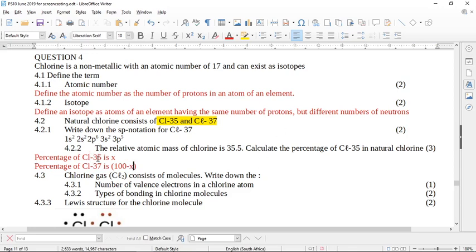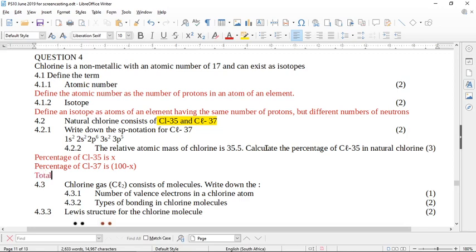So we have 100 minus X. Now remember this is the mass and there are X of them. And then our average is going to be 35.5. So if we find the average, we put the total mass over the total number of atoms, and that's going to give us an average mass. So to find the total mass, it'll be 35 times X, that'll be the mass of the chlorine-35.